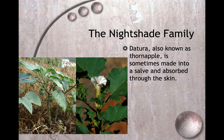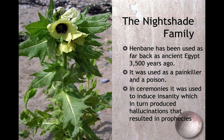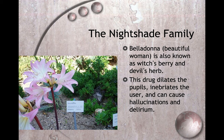Datura, also known as thorn apple, is sometimes made into a salve and absorbed through the skin. It actually grows wild in North America. Henbane has been used as far back as ancient Egypt 3,500 years ago — it was used as a painkiller and a poison, and in ceremonies it was used to induce insanity, which produced hallucinations that resulted in prophecies. Belladonna, meaning 'beautiful woman,' is also known as witch's berry and devil's herb. This drug dilates the pupils and can cause hallucinations and delirium. Women would put drops of belladonna in their eyes to dilate their pupils because men thought dilated eyes were attractive.